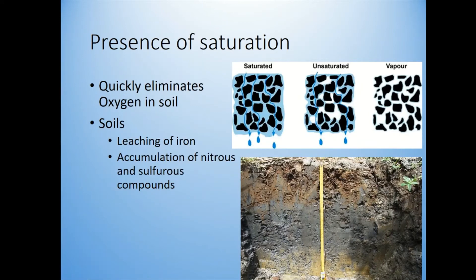Soil saturation is really interesting because it eliminates oxygen in the soil. In a dry soil, there are particles and air spaces between them, and oxygen moves from the surface down — this is why worms are useful, making pathways for oxygen. But if all those spaces are continuously saturated with water, even just for a little bit each year, you get anoxic conditions with no oxygen.